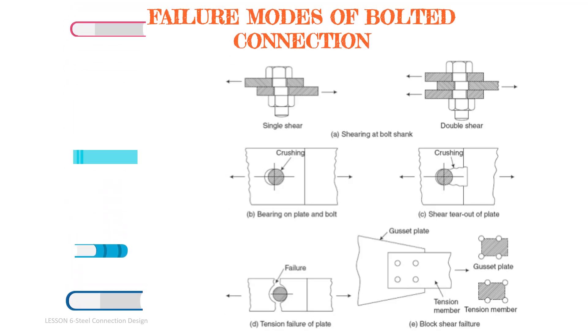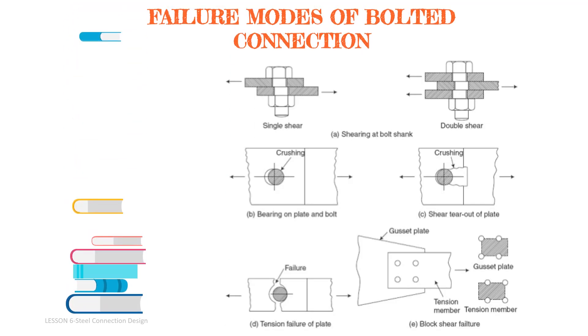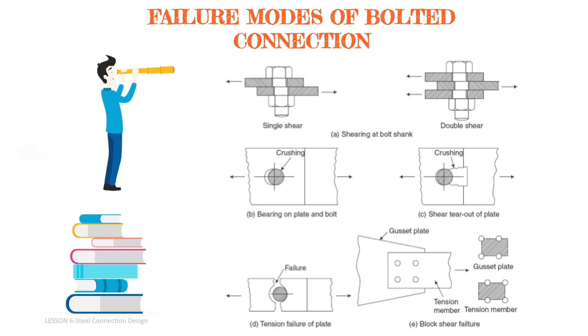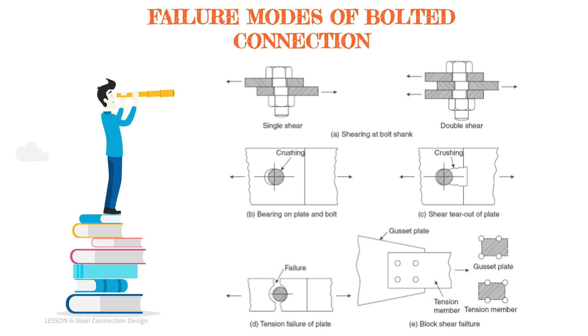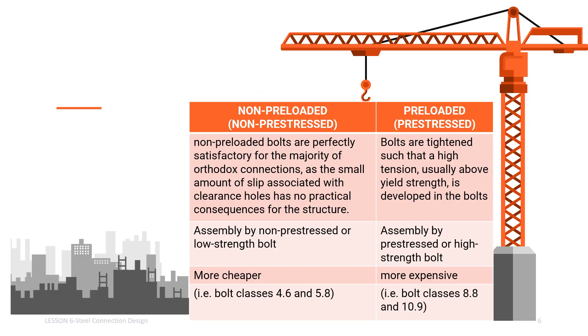Failure modes of bolted connection can be single shear, double shear, bearing on plate and bolt, shear tear out of plate, tension failure of plate, or block shear failure.